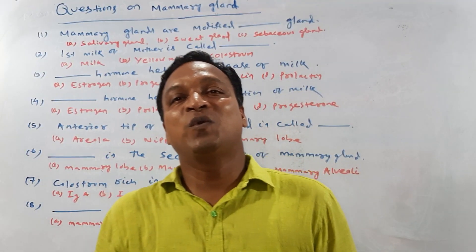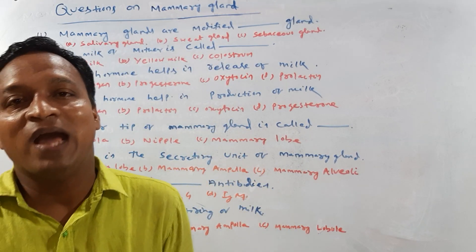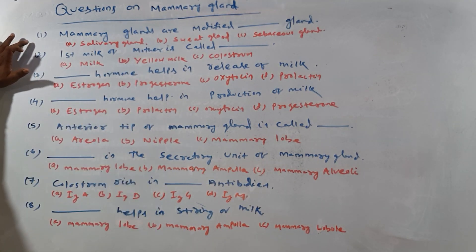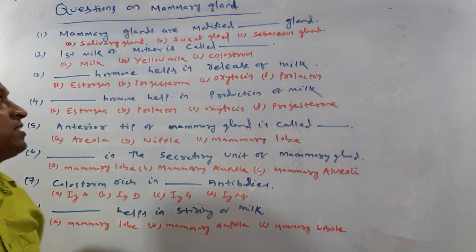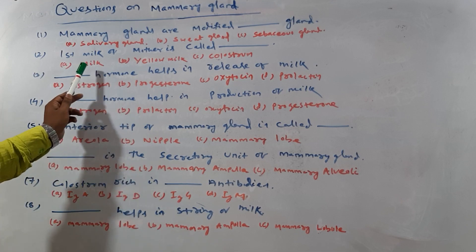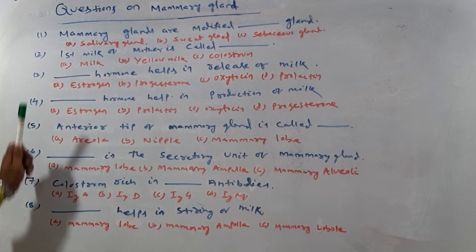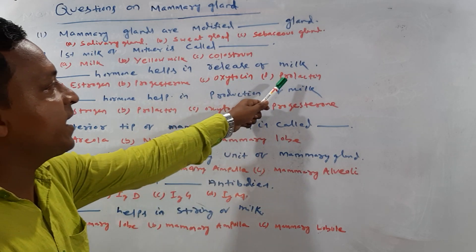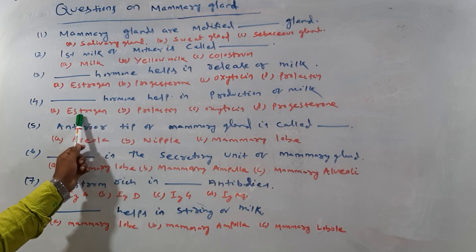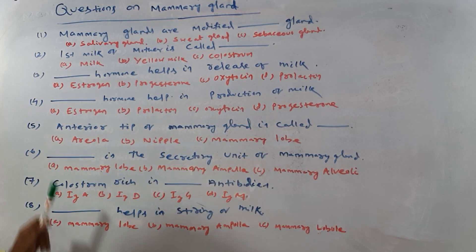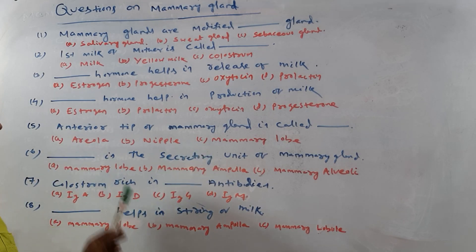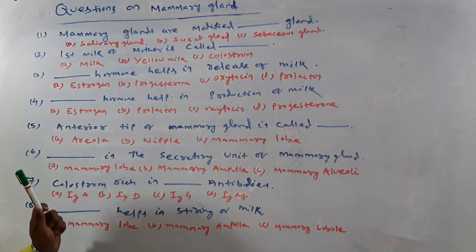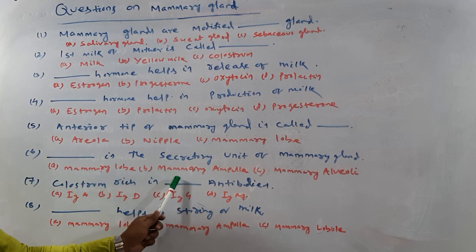Review questions for today's class on mammary glands: (1) Mammary glands are modified — salivary gland, sweat gland, or sebaceous gland? (2) First milk of the mother is called — milk, yellow milk, or colostrum? (3) Which hormone helps in release of milk — estrogen, progesterone, oxytocin, or prolactin? (4) Which hormone helps in production of milk? (5) Anterior tip of the mammary gland is called — areola, nipple, or mammary lobe? (6) What is the secretory unit of mammary gland — mammary lobe, mammary ampulla, or mammary alveoli?